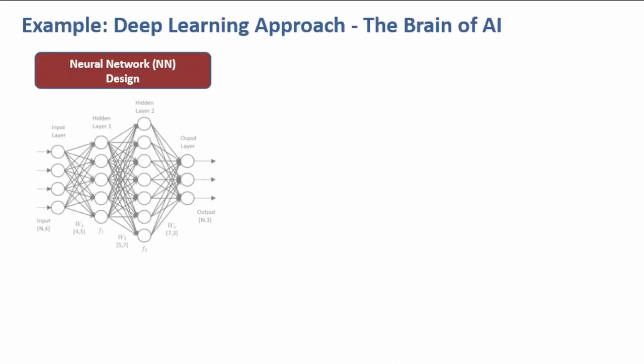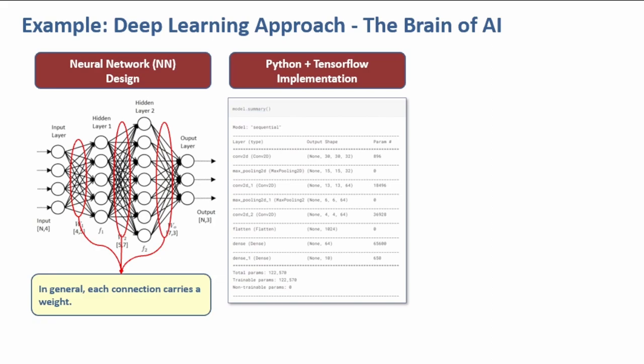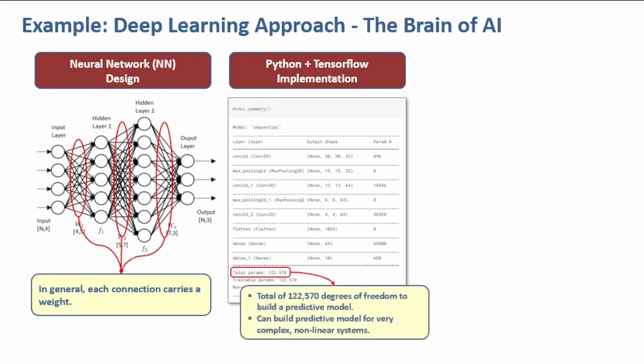This is a schematic design for a neural network. Each connection here carries a weight. This is a neural network I implemented using Python and TensorFlow some time back. It is more than a hundred thousand degrees of freedom to build a predictive model for very complex non-linear systems.